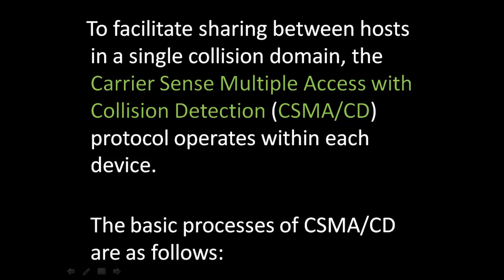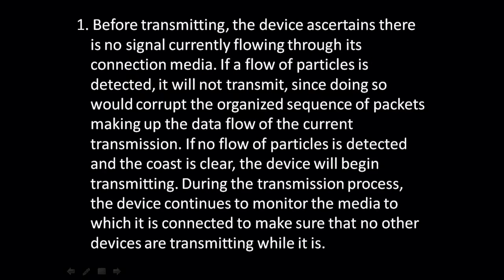The basic processes of CSMA-CD are as follows. First, before transmitting, the device ascertains there is no signal currently flowing through its connection media. If the flow of particles is detected, it will not transmit, since doing so would corrupt the organized sequence of packets making up the data flow of the current transmission. If no flow of particles is detected and the coast is clear, the device will begin transmitting. During transmission, the device continues to monitor the media to make sure no other devices are transmitting.